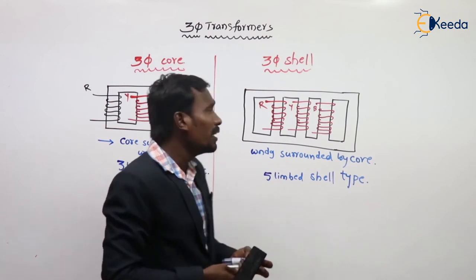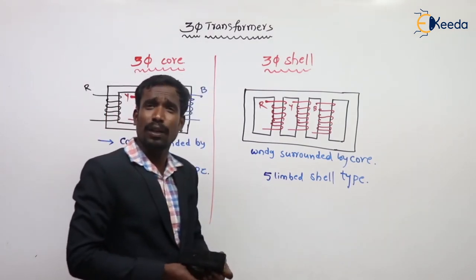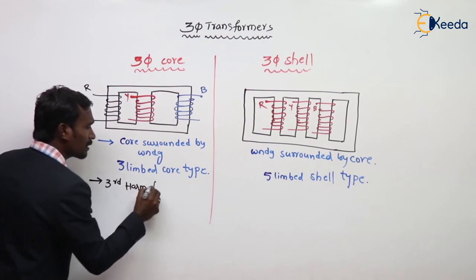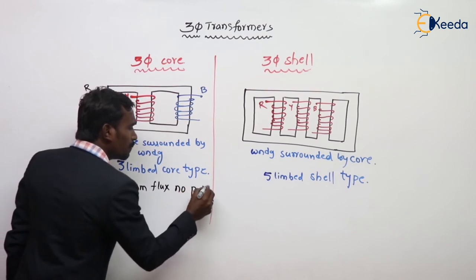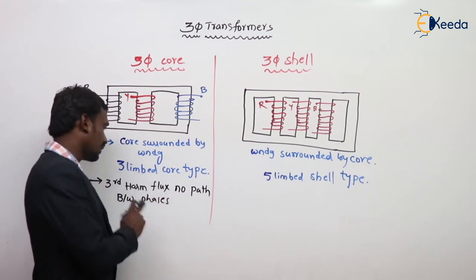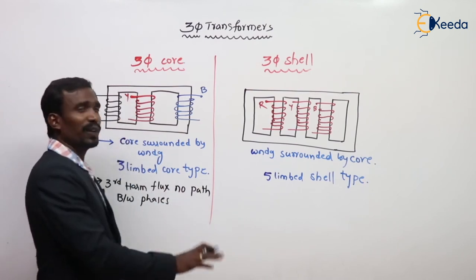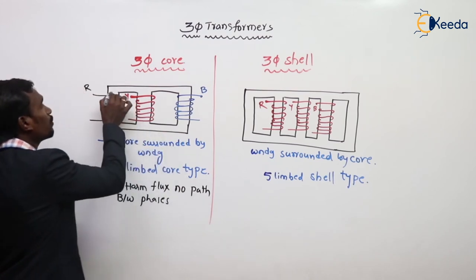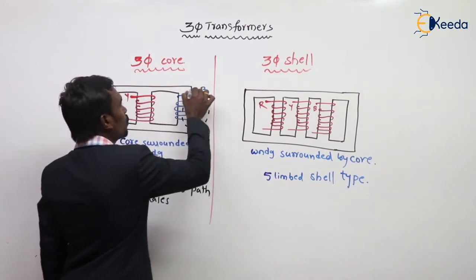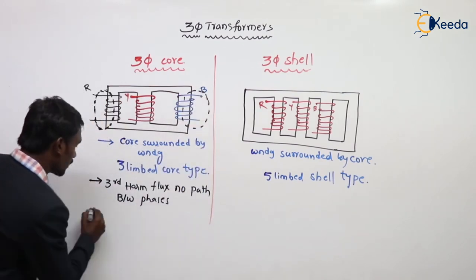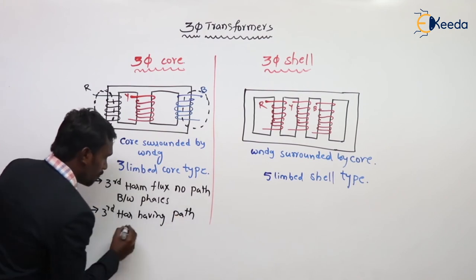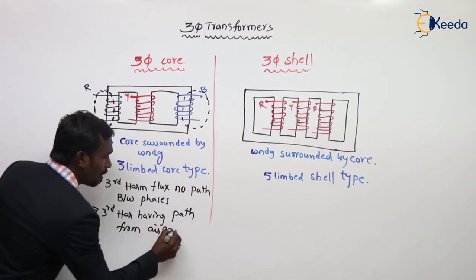In core type transformer, the third harmonic currents and third harmonic flux have no path between phases. Therefore, the third harmonics choose the air gap path — they flow through the air gap.